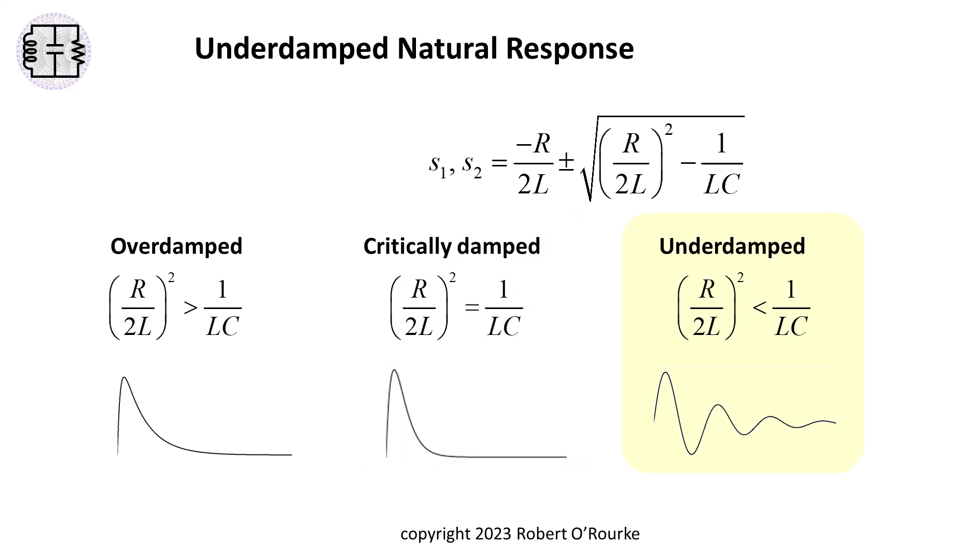In the underdamped case, the quantity under the square root sign is negative, making the characteristic roots complex, leading to an exponentially decaying sinusoidal response with time on the horizontal axis.